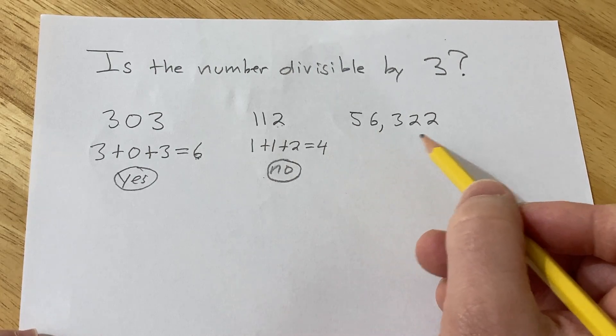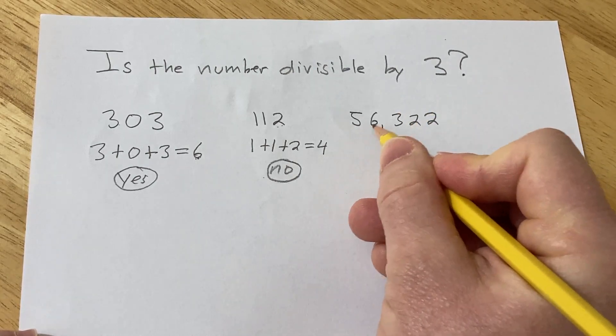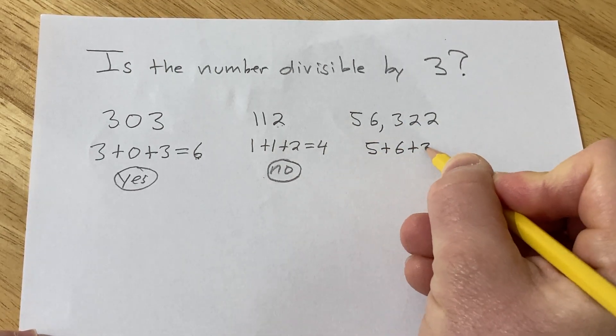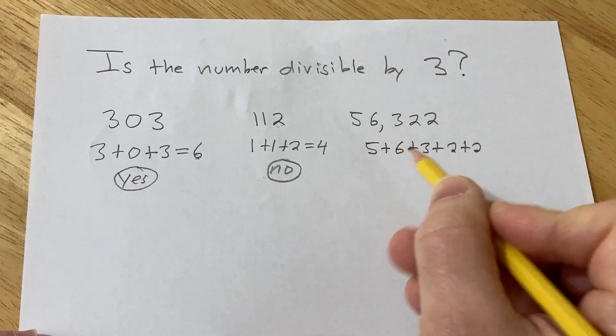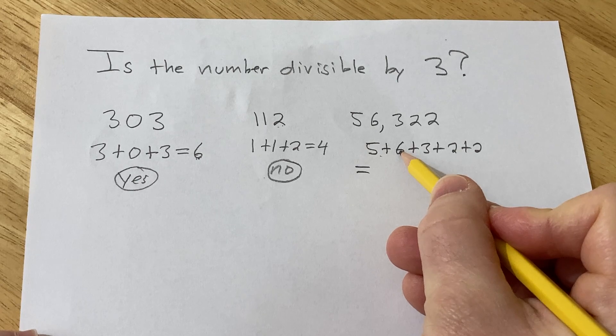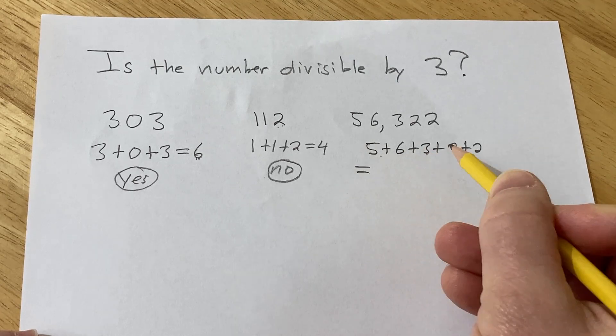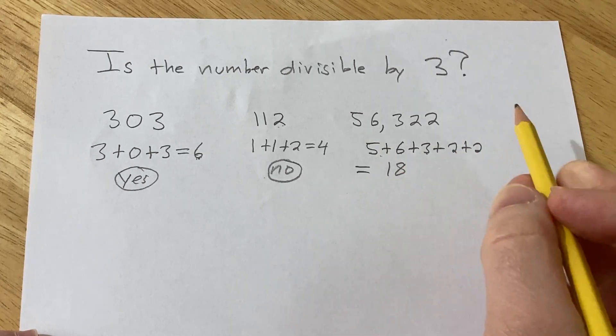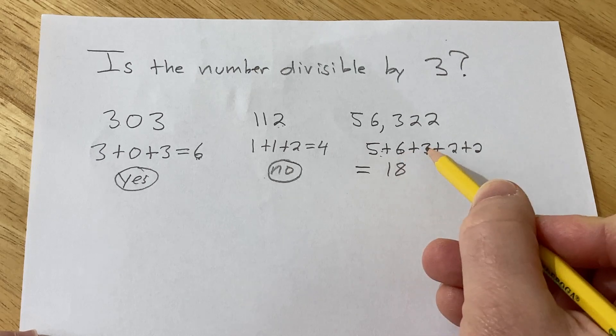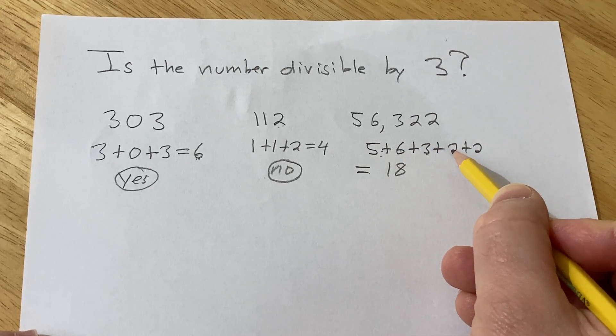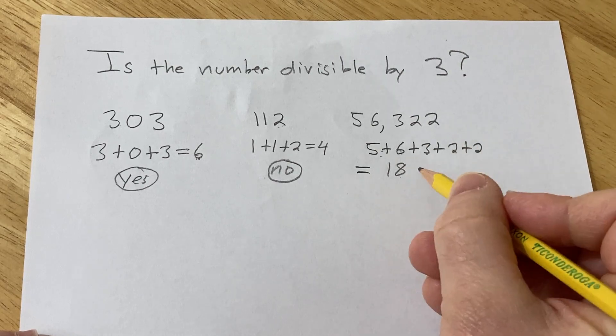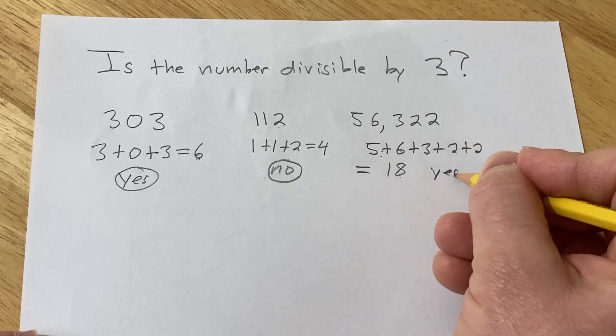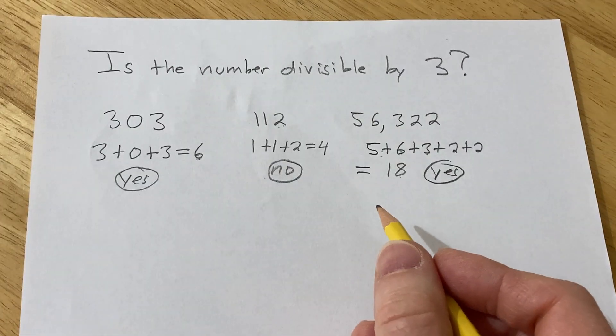Here's a really big number, so it looks a little bit scarier, but we should be able to do it. So again, we just add up all of the digits. So 5 plus 6 plus 3 plus 2 plus 2. Okay, so this is going to be 5 plus 6 is 11, plus 3 is 14, plus 2 is 16, plus 2 is 18. So we get 18. So that is divisible by 3. 3 goes into 18 6 times, so the answer here is yes. So that's how you can tell if a number is divisible by 3.